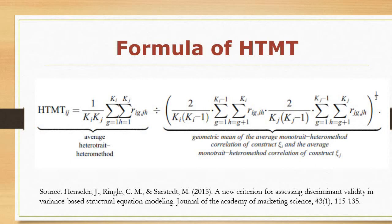Henseler et al. have presented this formula of HTMT. It has two parts. Part 1 is the average hetero-trait hetero-method correlations. Part 2 is the geometric mean of the average mono-trait hetero-method correlation of construct 1 and the average mono-trait hetero-method correlation of construct 2. You take the product of these two, take the square root, then divide Part 1 by this value to get the HTMT.